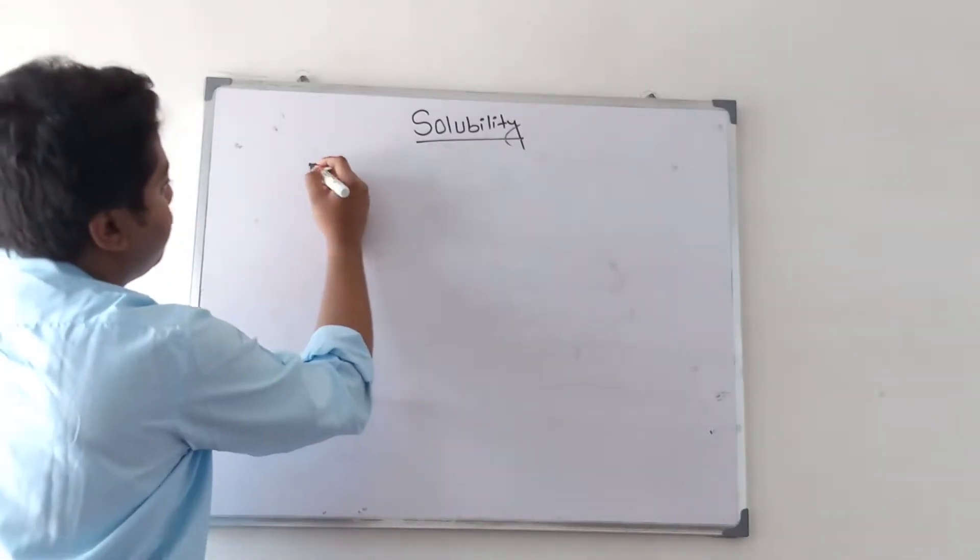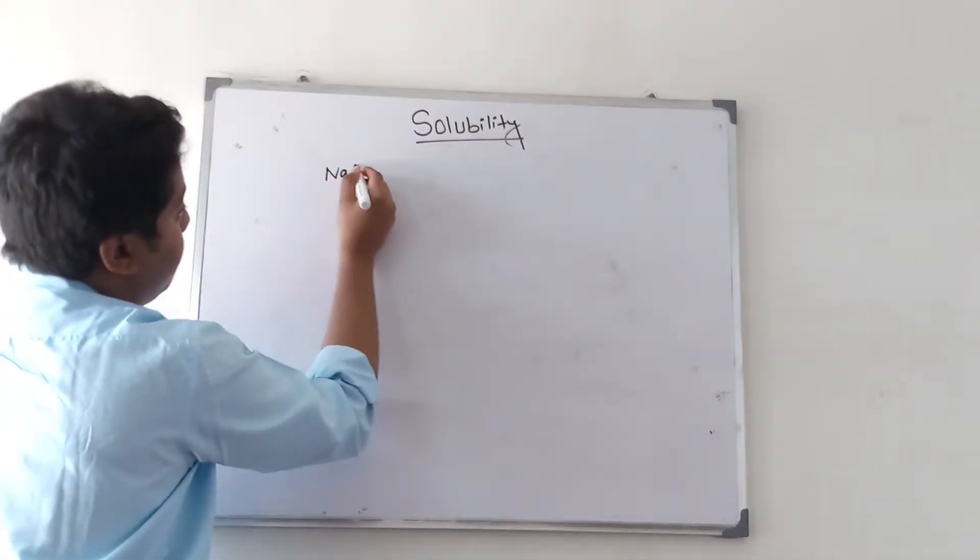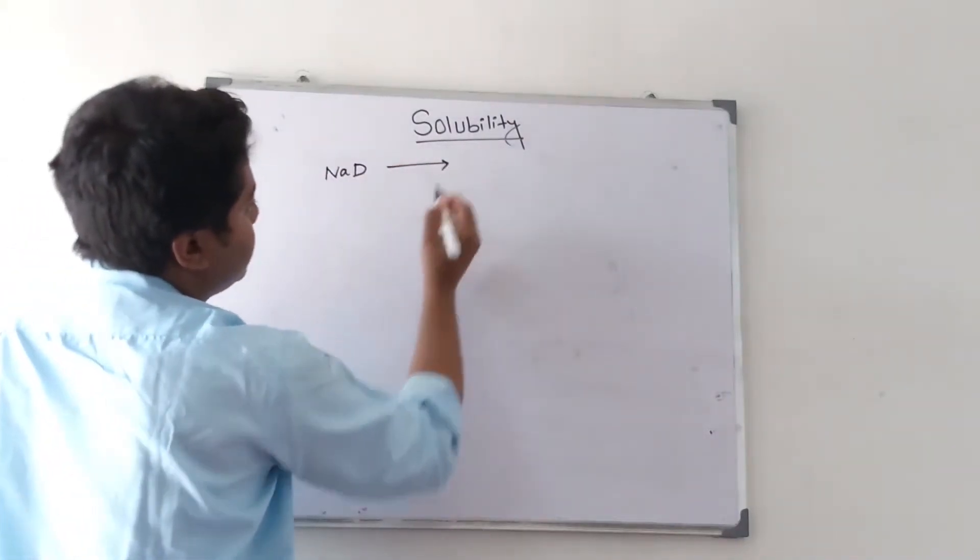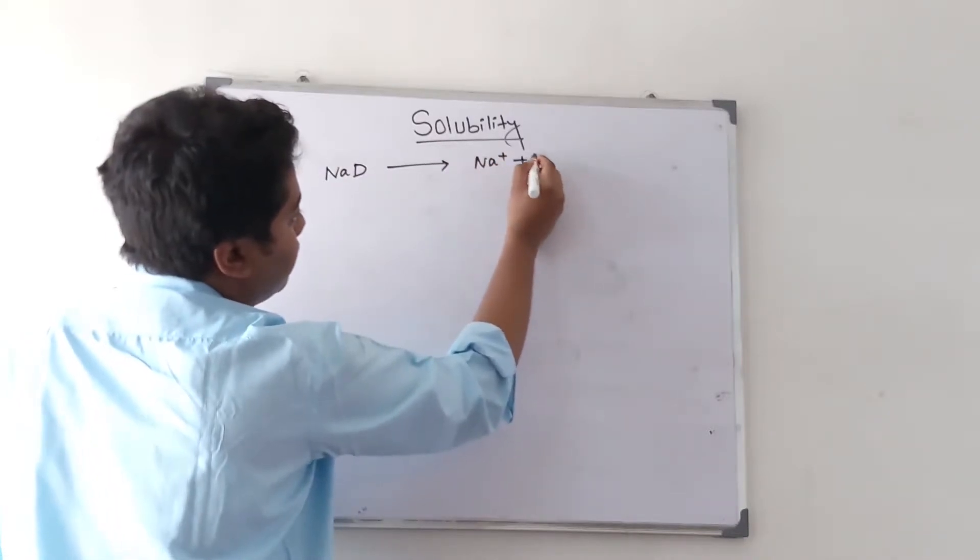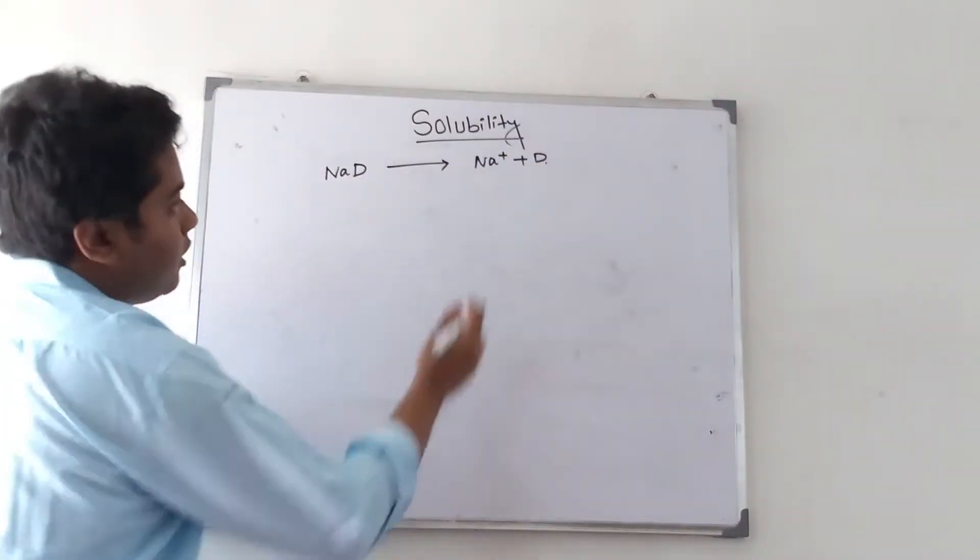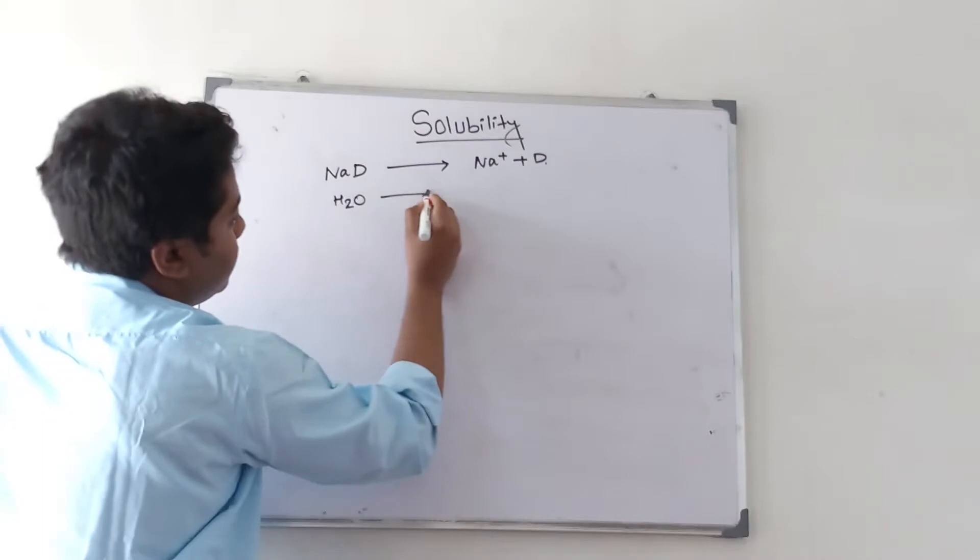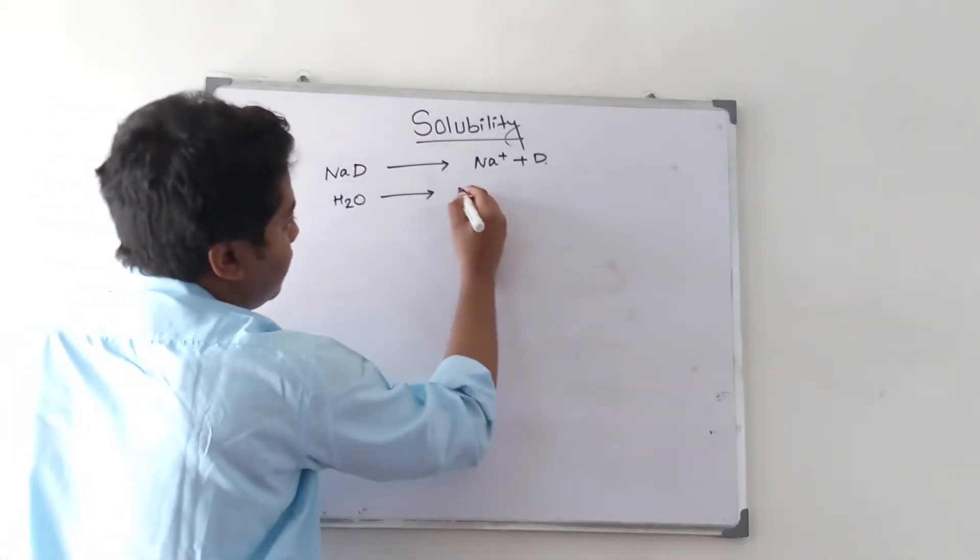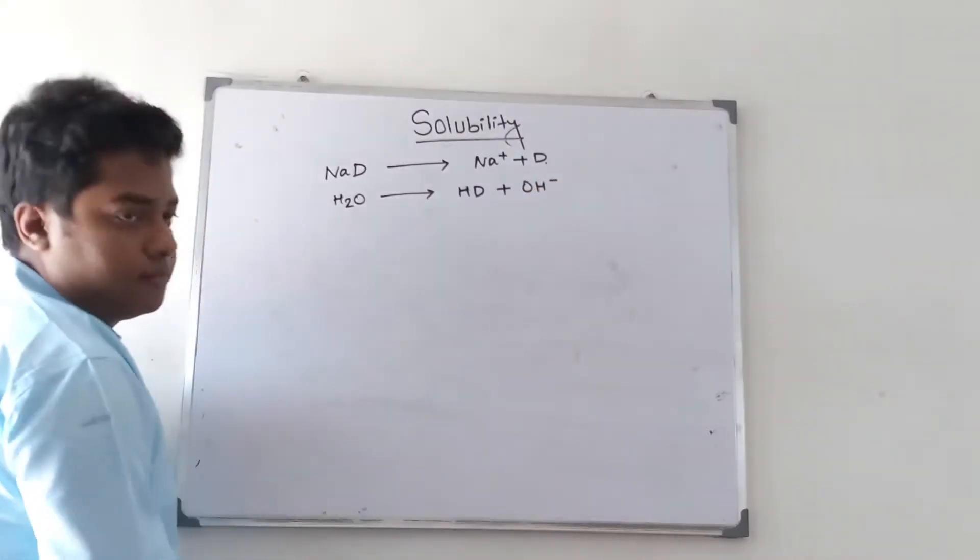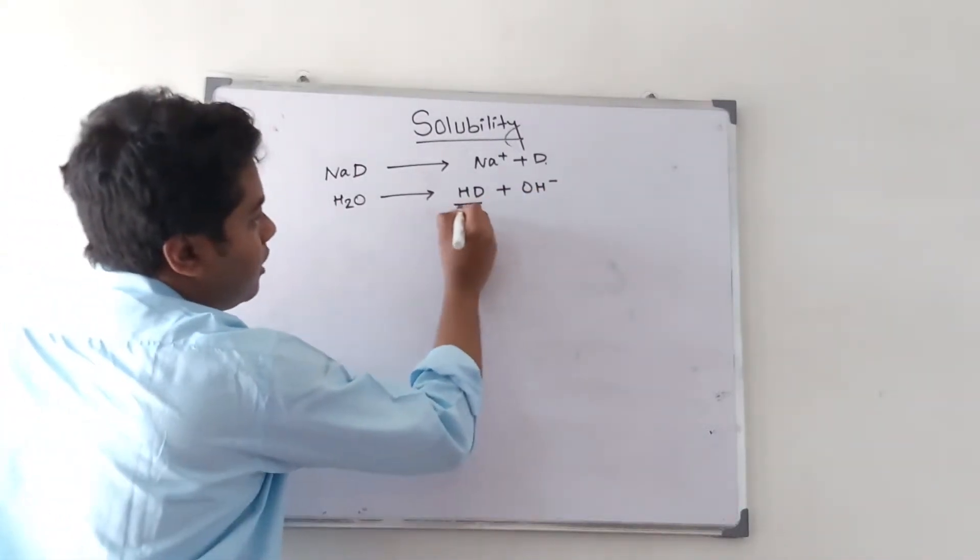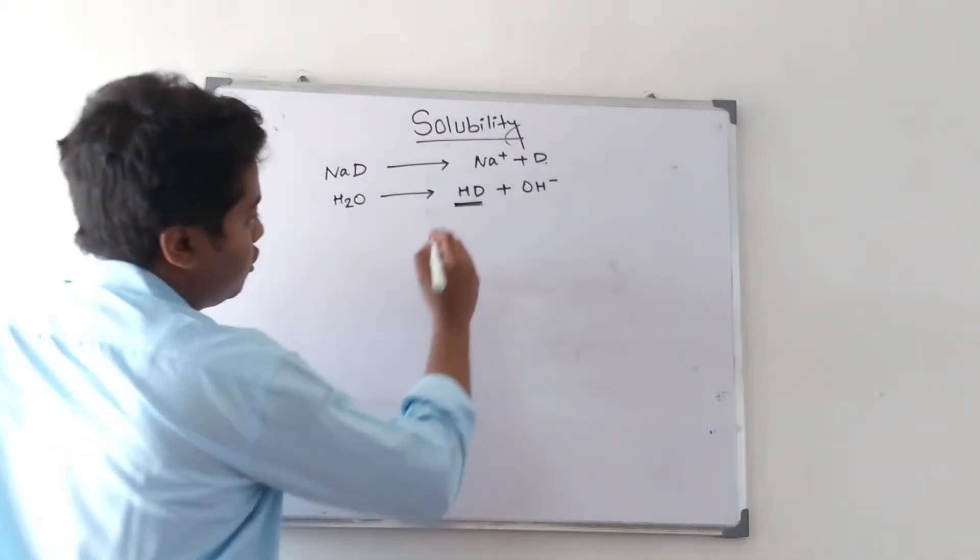Let us take an example. Suppose we are taking sodium form of a drug, which gets associated to A+ and D-. This drug molecule will react with water to form the conjugate form. This is the conjugate form of the drug, which is aqueous soluble.